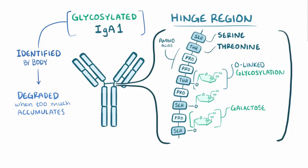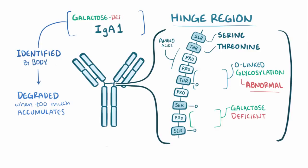These glycosylated IgA1 antibodies are identified by the body and degraded when too much accumulates. In IgA nephropathy, though, there's abnormal glycosylation of these serine and threonine residues, causing them to be galactose deficient. These galactose-deficient IgA1s are not identified by the body, and therefore not degraded, allowing them to simply accumulate.